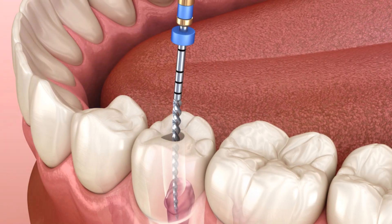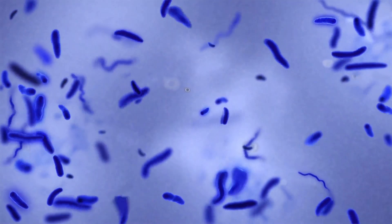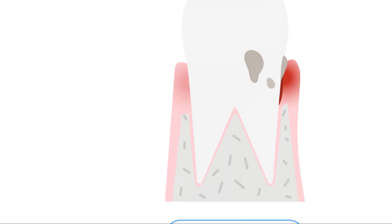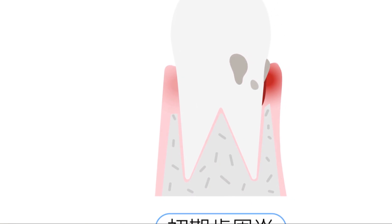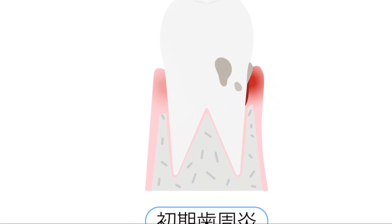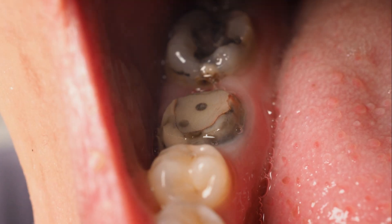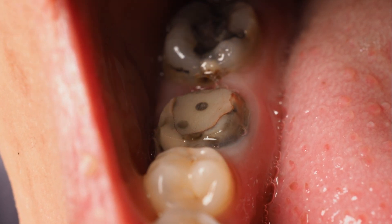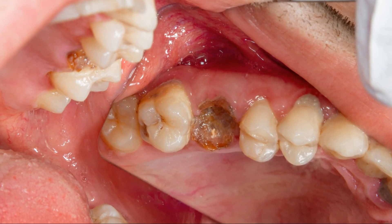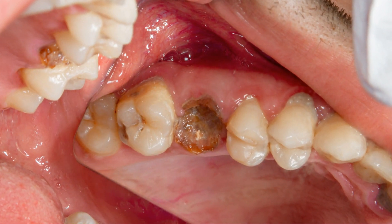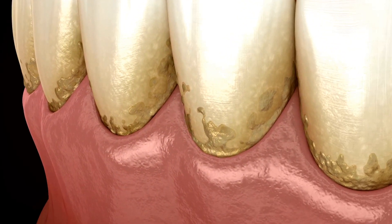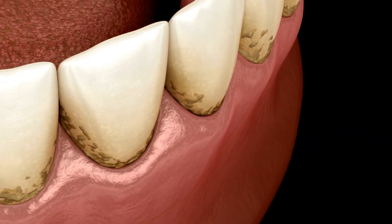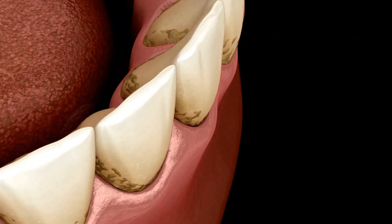Now let's talk about the causes of an abscessed tooth. The main culprit is usually a bacterial infection. Bacteria can enter the tooth through a cavity, especially if it's not treated promptly. Once inside, the bacteria can multiply, leading to infection. Gum disease is another common cause — unhealthy gums can pull away from the teeth, creating pockets where bacteria thrive, potentially leading to an abscess.